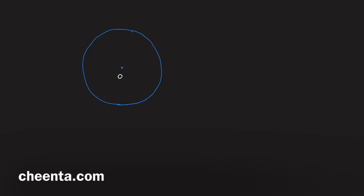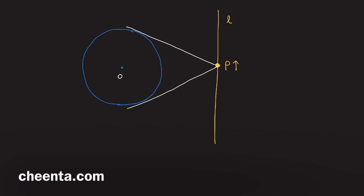We have a circle with center O and a straight line L that is outside the circle. A point P is moving along the straight line. We want to draw tangents from P to the circle. When P is at a given position, the tangents will touch the circle at two points.